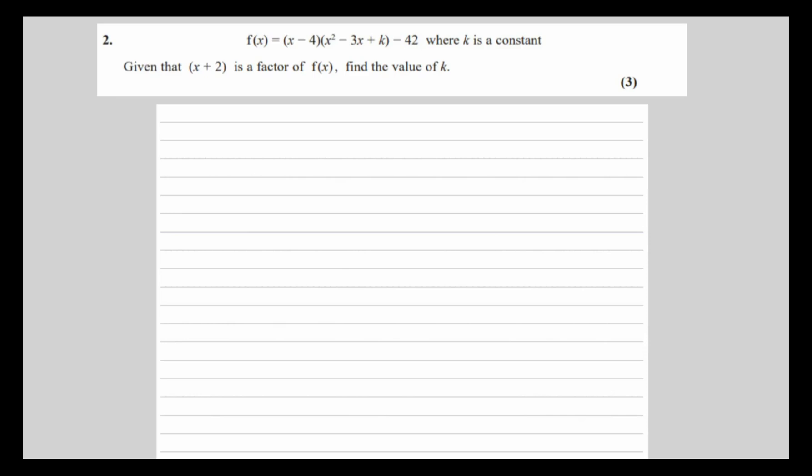We know from the factor theorem that if (x + 2) is a factor, that means f(-2) must equal 0. So (x + 2) is a factor, so f(-2) = 0. We can substitute in -2 and make it equal to 0.